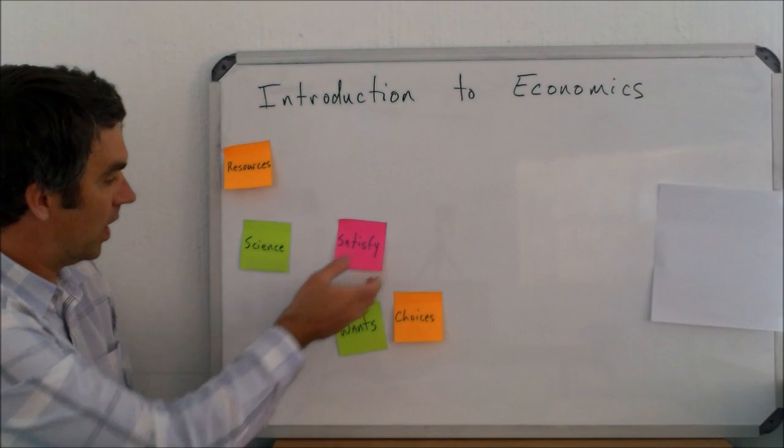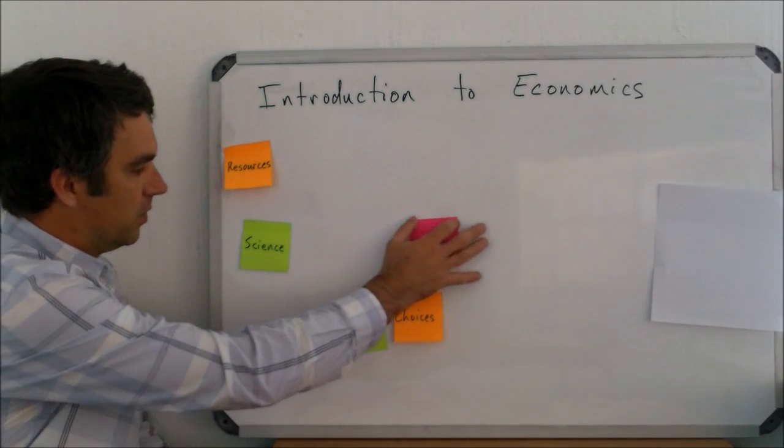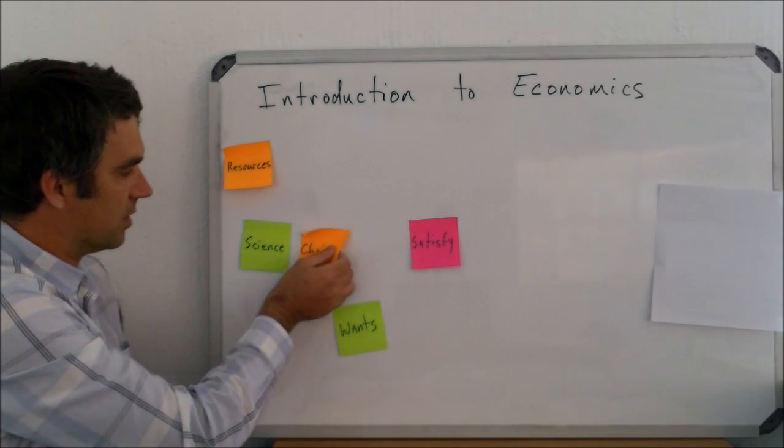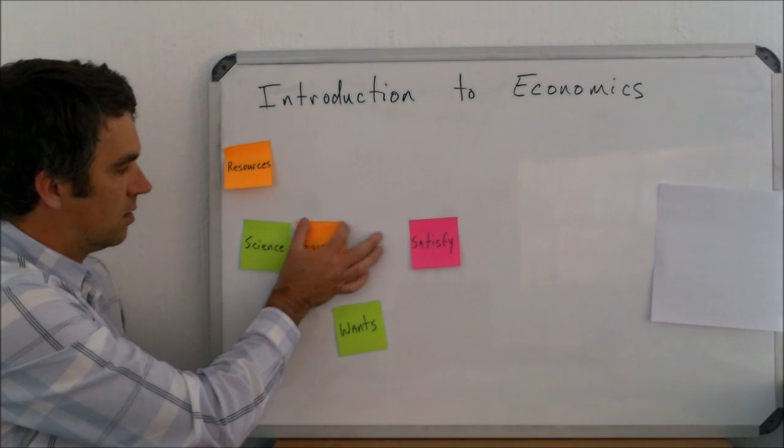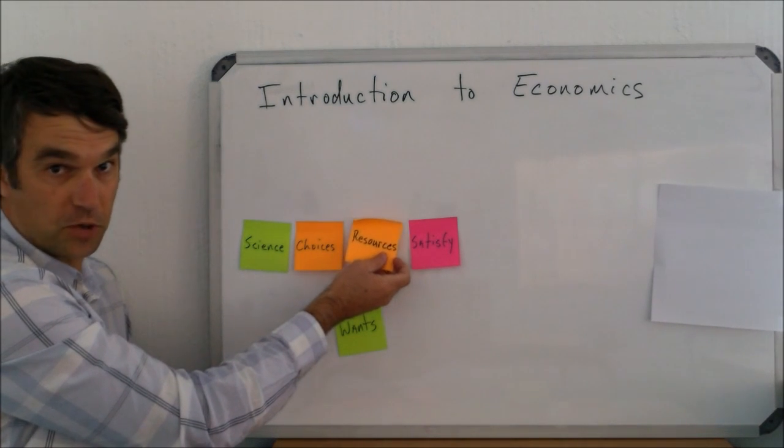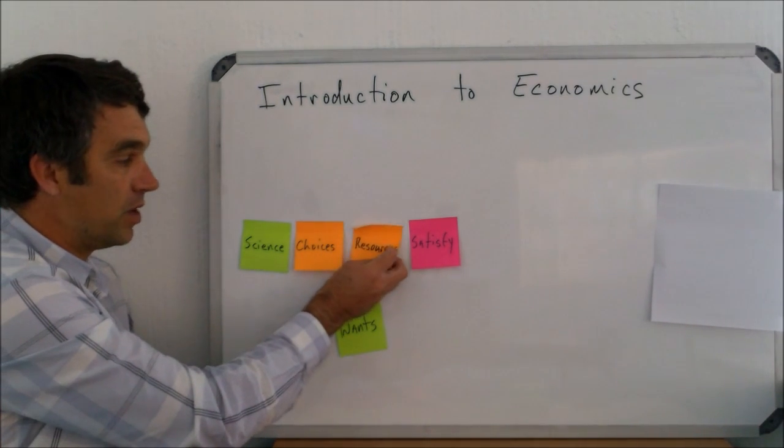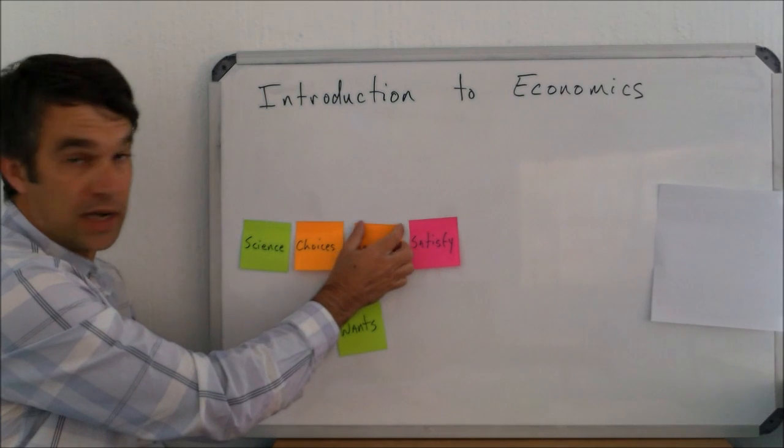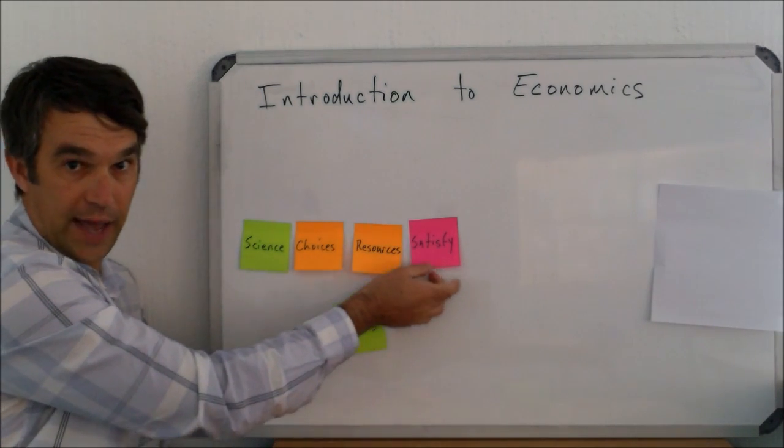Well, what else do we have to figure out? If it's people doing it, they're probably going to make choices. And what are they going to make choices about? Well, they're going to make choices about what they're going to do with their resources that they have available. Now, resources can mean a lot of things. It can mean natural resources like oil or land or water,